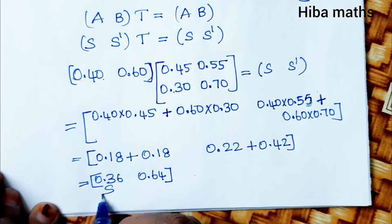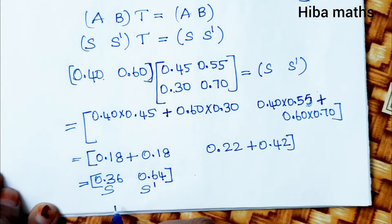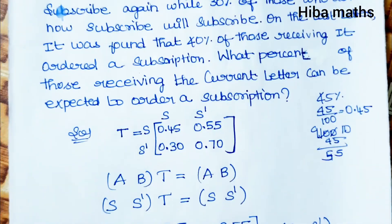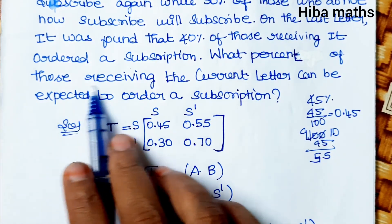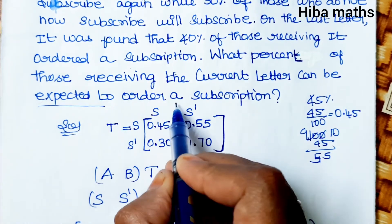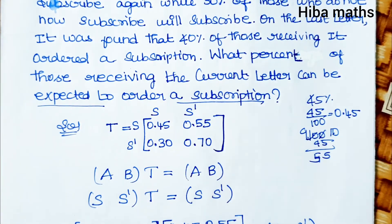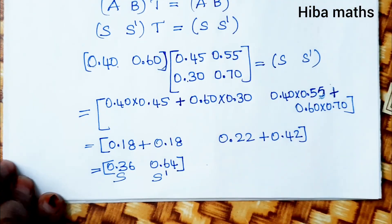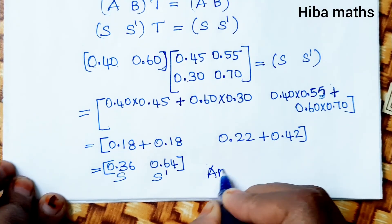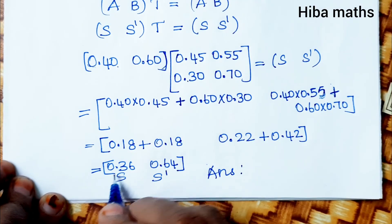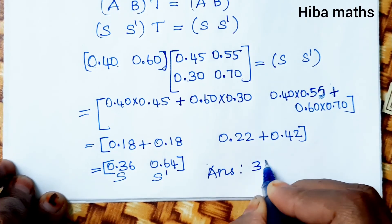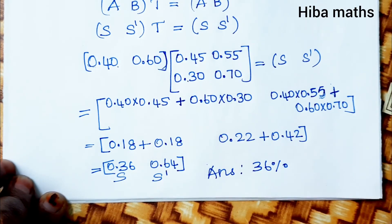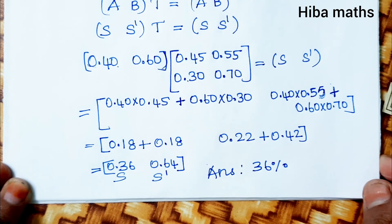What percentage of those receiving the current letter can be expected to order a subscription? Our final answer is 0.36, that is 36%. Thank you so much for watching.